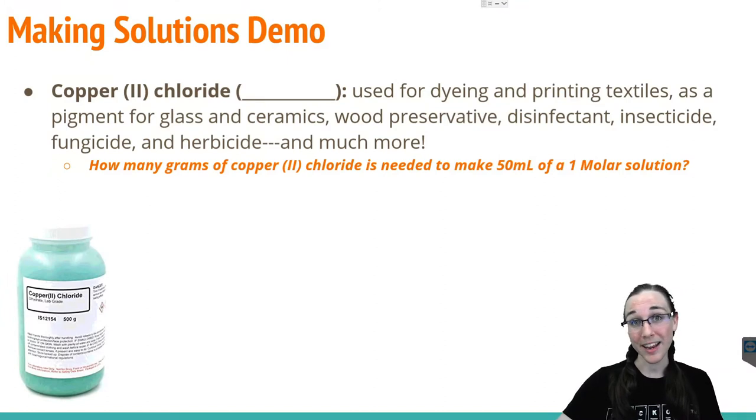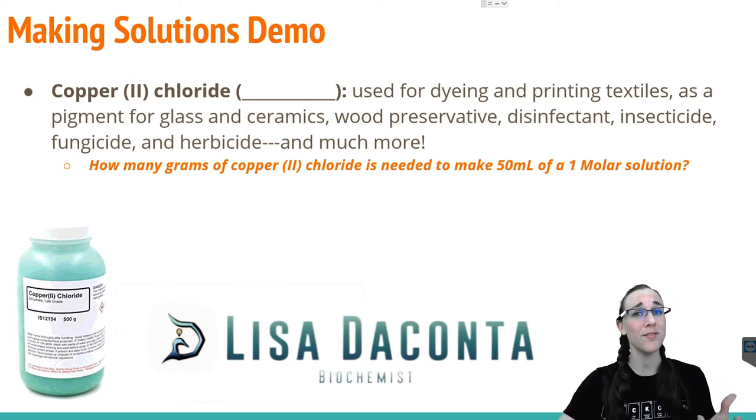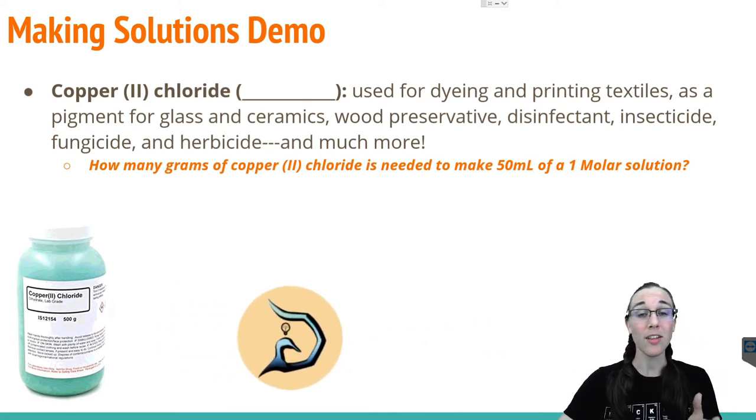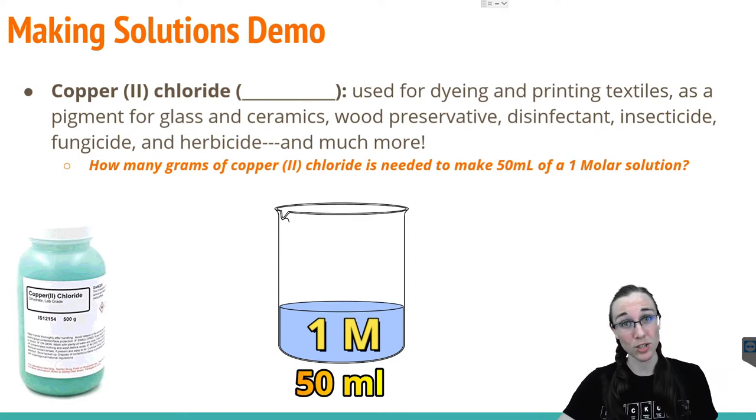Copper 2 chloride is a compound used for dyeing and printing textiles. It's used for pigments in glass and ceramic, a wood preservative, disinfectant, and much more. So if we wanted to know how many grams of solid copper 2 chloride were needed to make 50 milliliters of a one molar solution of copper 2 chloride, how would we do so?